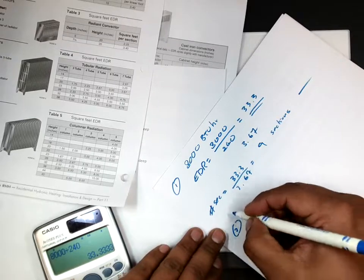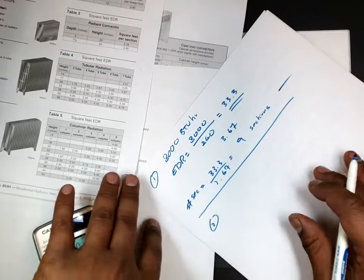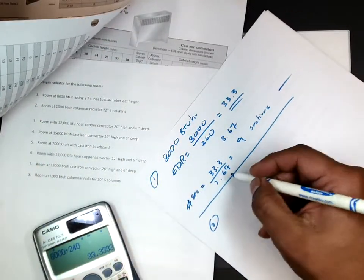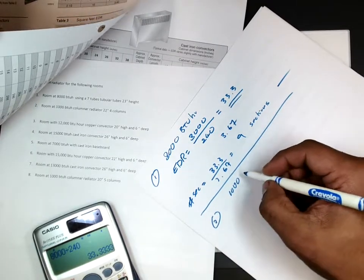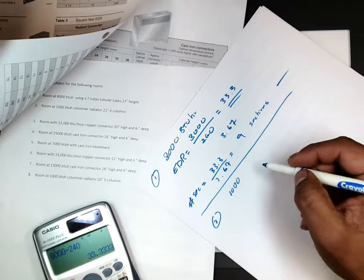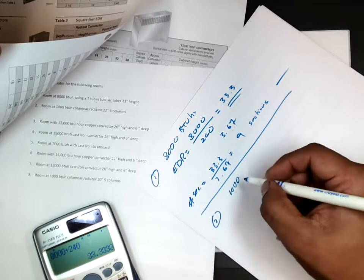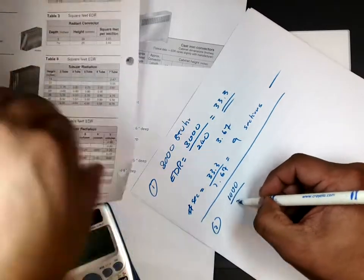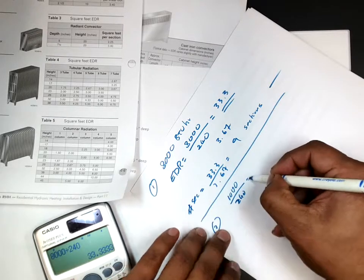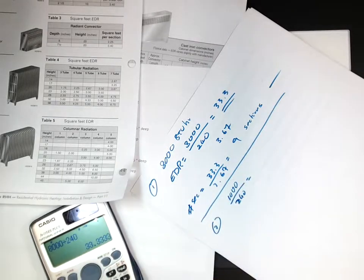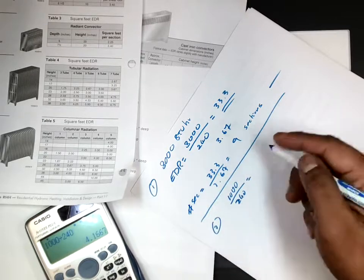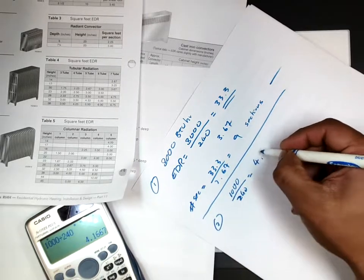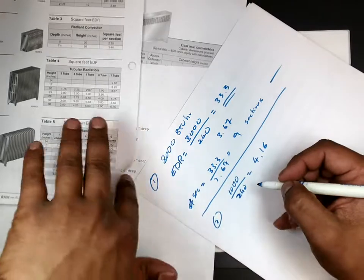Number two. 1,000 BTU. That's very small, probably a bathroom or so. I'm using a columnar radiator. So first I will compare this to 240, so it's going to be really small. 4.16. That's my EDR.